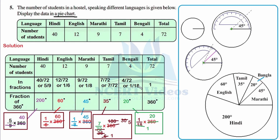When we add all these fractions, their sum should equal 1, since we are covering all students. Now we need to find the sector angle — that is, the value of each fraction in terms of central angle out of 360 degrees. For Hindi, 5 over 9 multiplied by 360: cancelling 9 into 360 gives 40, and 40 times 5 is 200 degrees.